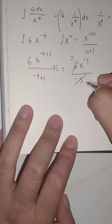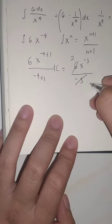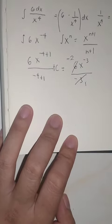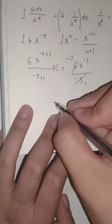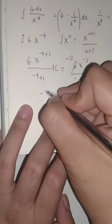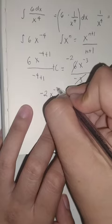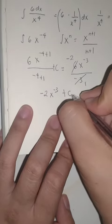We have 2 here. Cancel this out, one negative. So we will have negative 2x raised to negative 3 plus C.